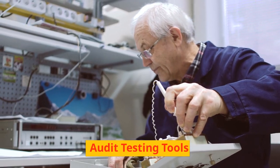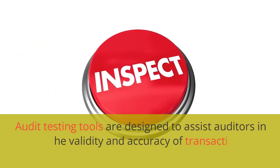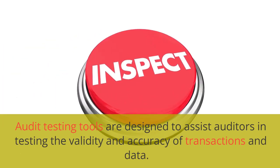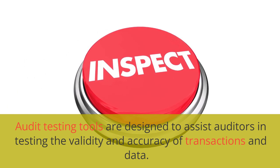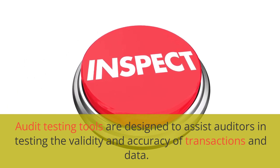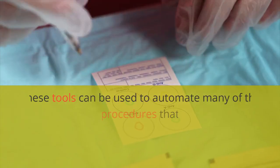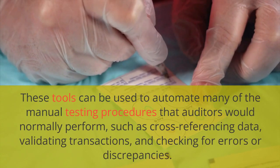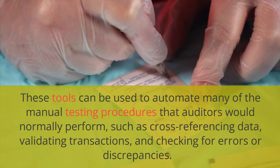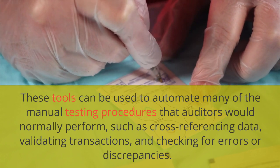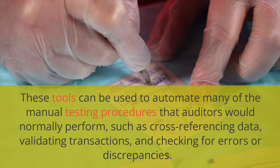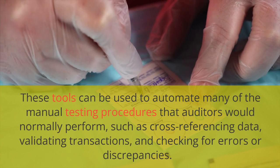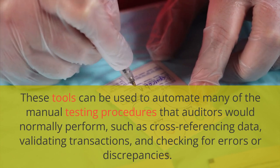Audit testing tools are designed to assist auditors in testing the validity and accuracy of transactions and data. These tools can be used to automate many of the manual testing procedures that auditors would normally perform, such as cross-referencing data, validating transactions, and checking for errors or discrepancies.